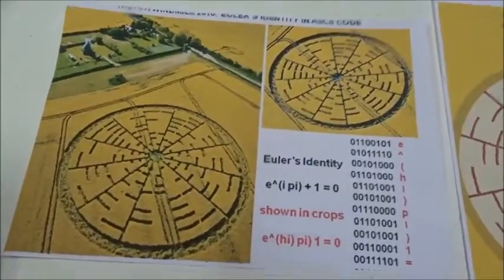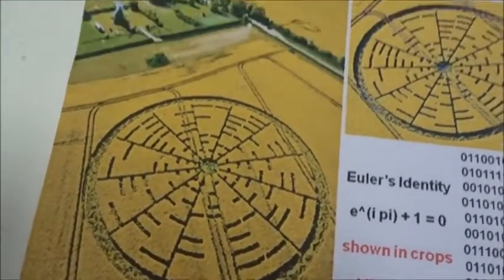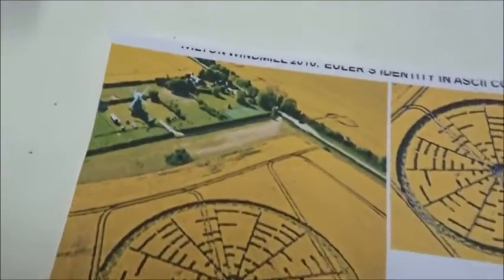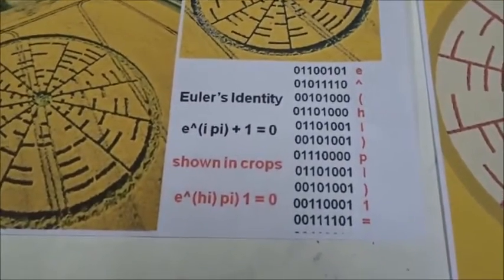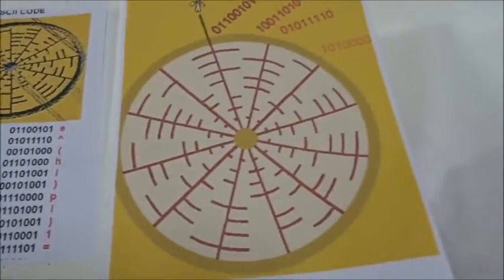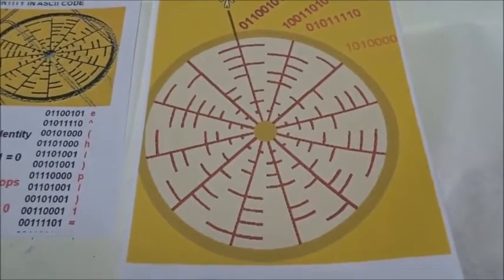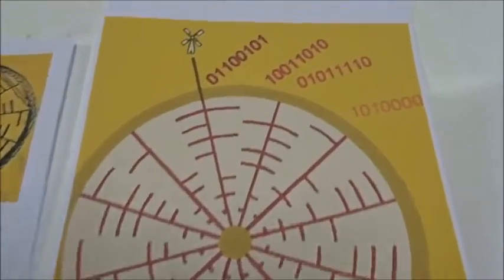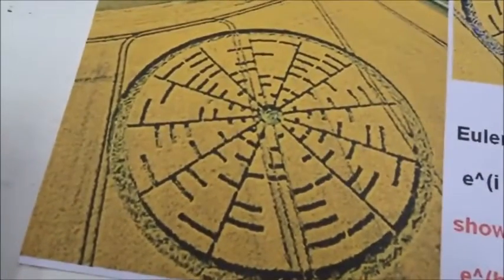Today we're going to talk about why the crop artist drew this beautiful coded crop picture near a windmill in 2010. It had a code for Euler's identity, a mathematical formula. It was a big disc with horizontal lines and binary code, placed next to a windmill to indicate that it should represent some sort of rotation.